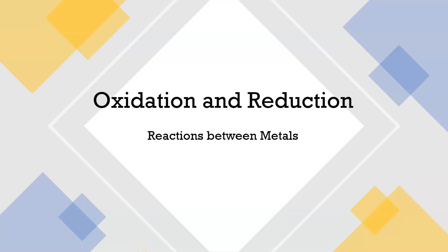Just like we saw precipitation reactions with ionic compounds as a way to predict what they are and how they behave, there is a reaction that metals undergo. It is called oxidation and reduction. Although oxidation-reduction is a bigger type of process, we're going to focus just on how it impacts how metals react.